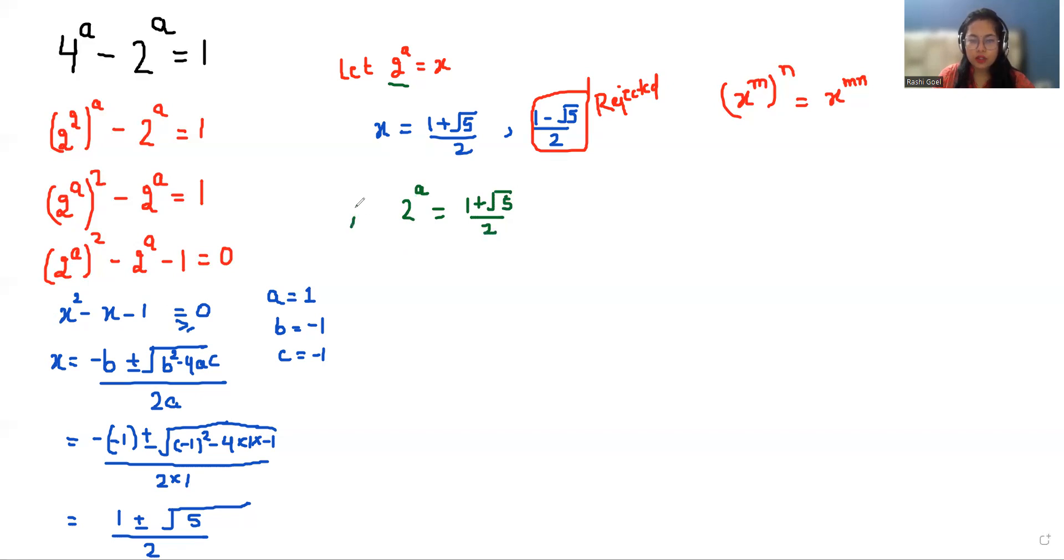So we are taking log both sides. log(2^a) = log((1 + √5)/2). Now we know the rule of log: log(x^y) can be written as y·log(x).